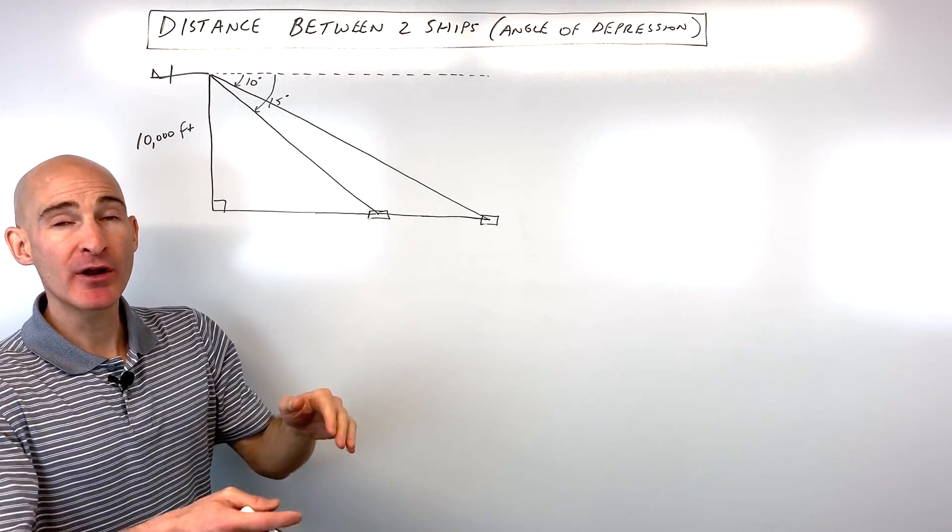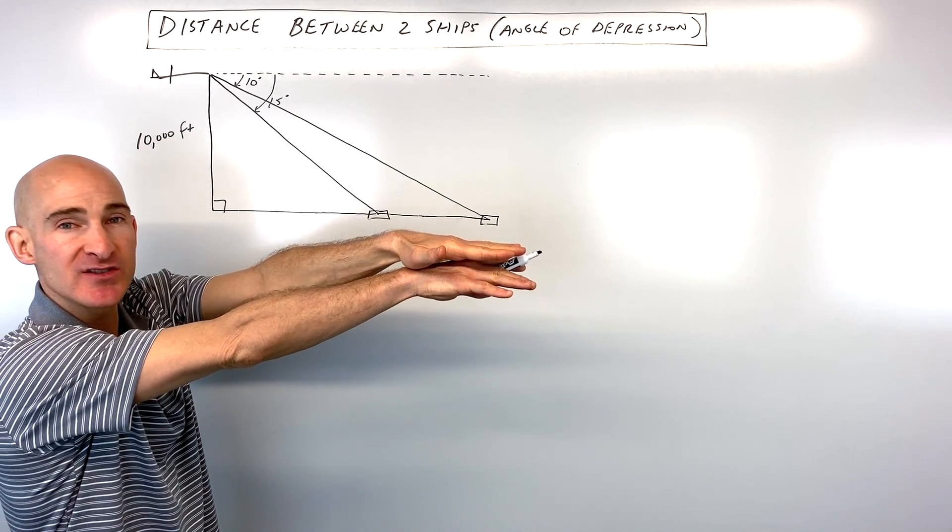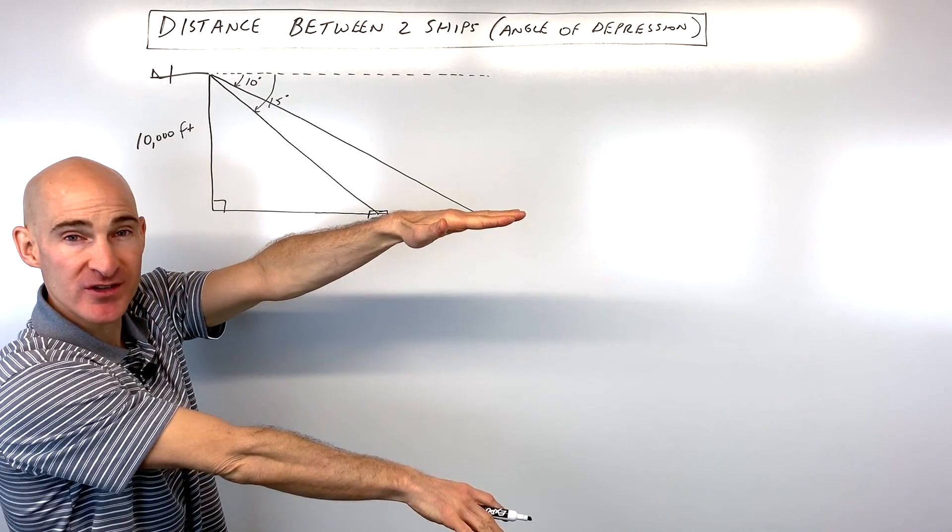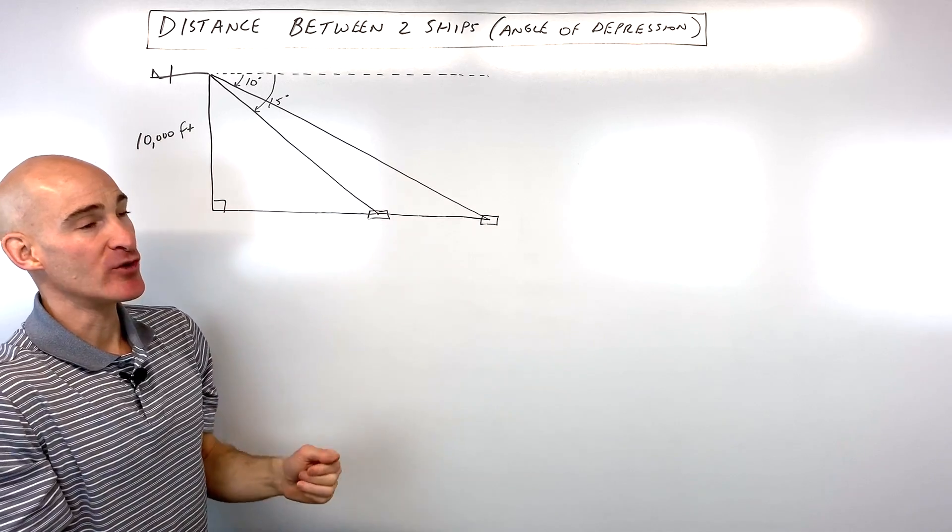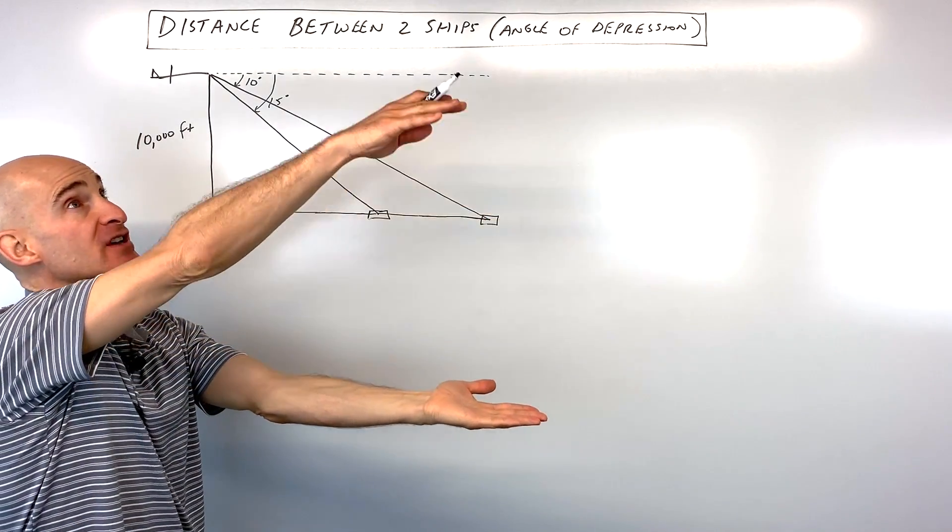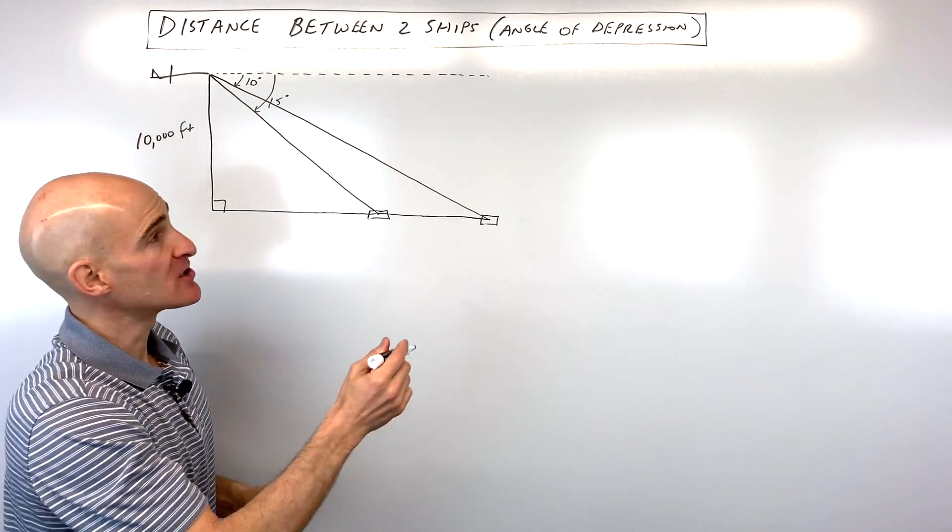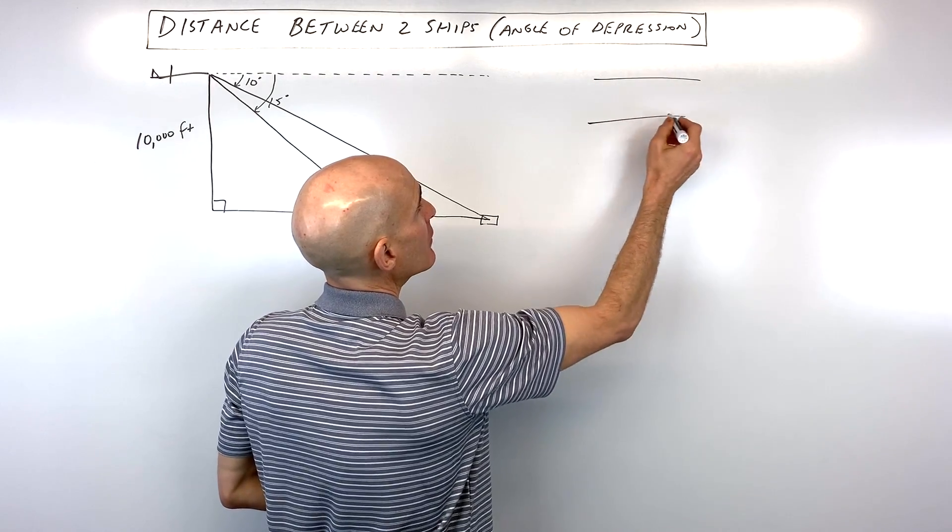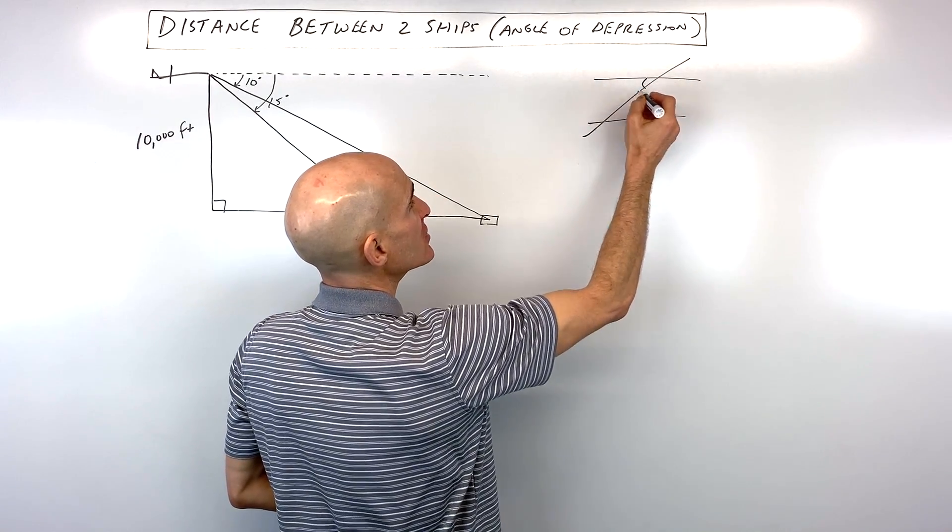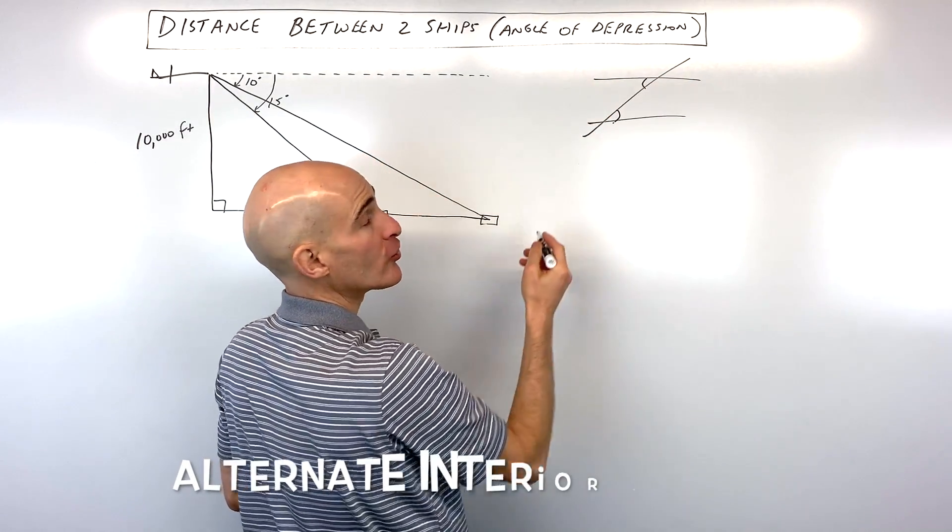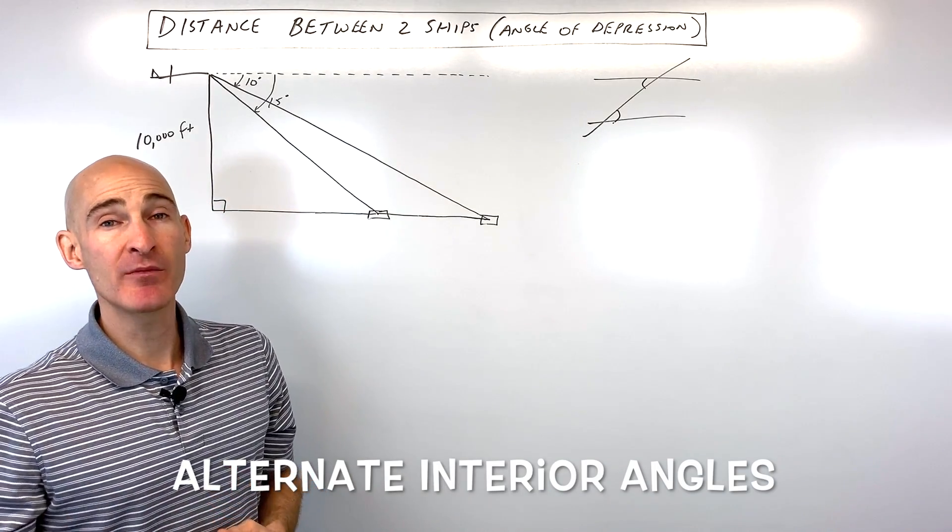Now remember when you talk about angle of depression, you're talking about the angle that's down from the horizontal. And when you're talking about angle of elevation, you're talking about the angle that's up from the horizontal. But what's interesting is that the angle of elevation and the angle of depression, these are actually like alternate interior angles. They're congruent. You probably remember this from geometry.